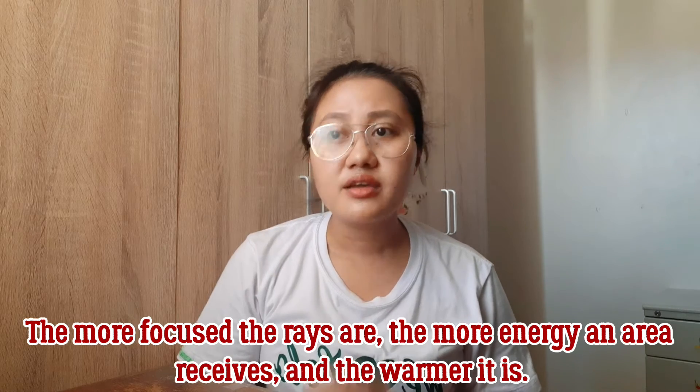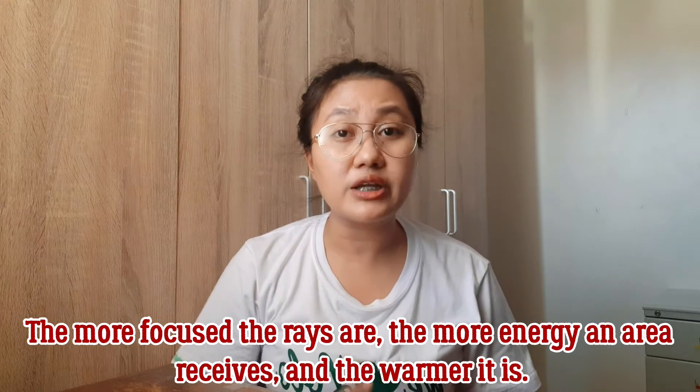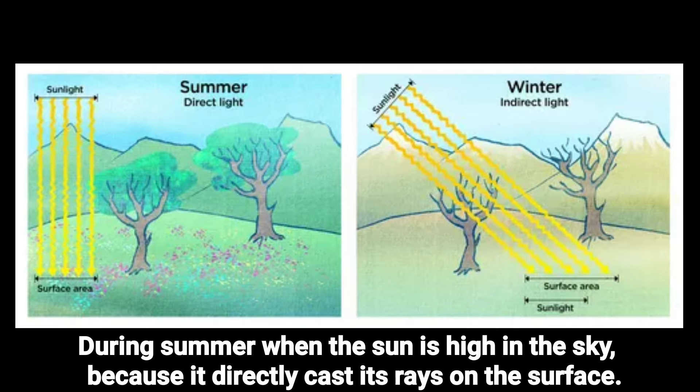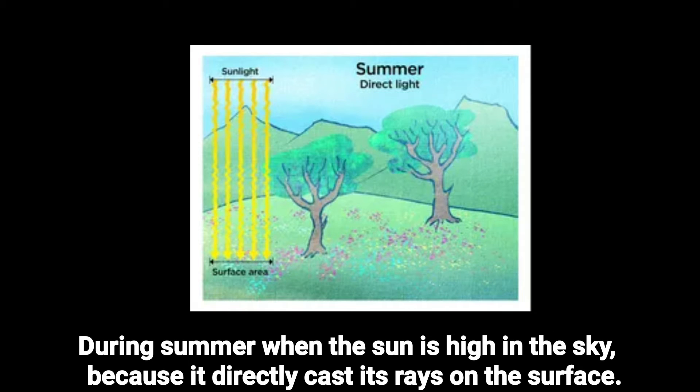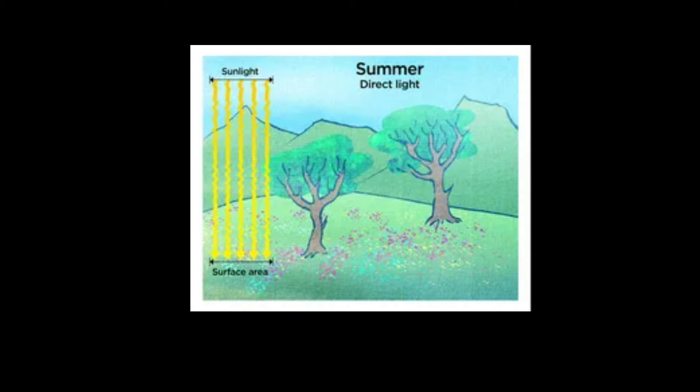Yung pag-tilt niya, naka-slant lang yan. The more focused the rays are, the more energy an area receives and the warmer it is. Nagiging resulta dito ay may mga part ng Earth na nakaka-receive sila ng direct na sinag ng araw, pero meron din mga part ng Earth na hindi direct ang natatamaan. Since yung Earth ay nakaslant, hindi direct ang natatamaan yung parte nung pababa o pataas. Always remember that during summer, the sun is high in the sky — direct yung tumatama dito ang sikat ng araw. Tinatawag nating direct sun rays ito — heat is more concentrated and covers a small area which tends to be warmer.